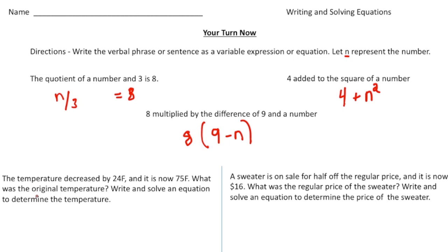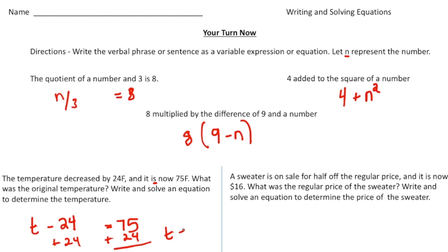The next problem says: 'The temperature decreased by 24 degrees Fahrenheit and is now 75 degrees Fahrenheit. What was the original temperature? Write and solve an equation.' So: t − 24 = 75. To solve, add 24 to both sides, and you get t = 99 degrees Fahrenheit.